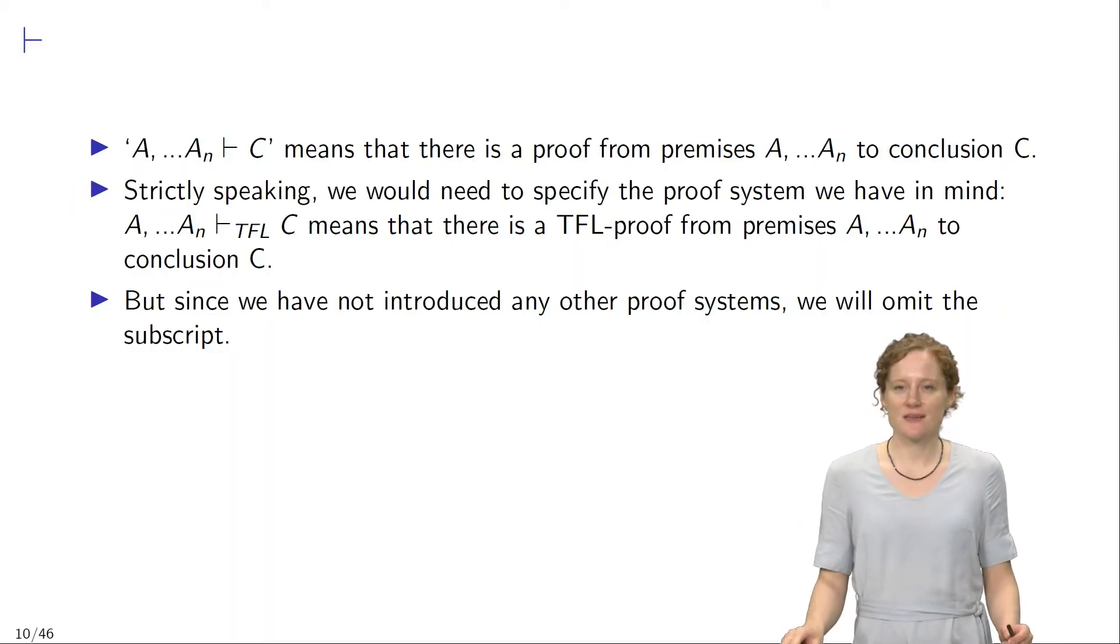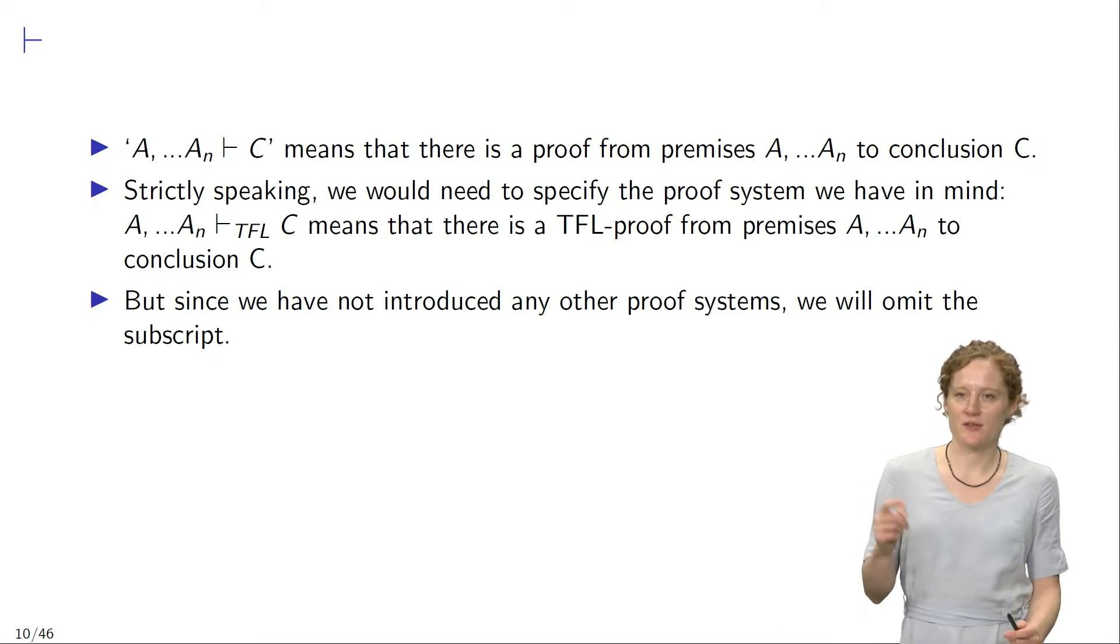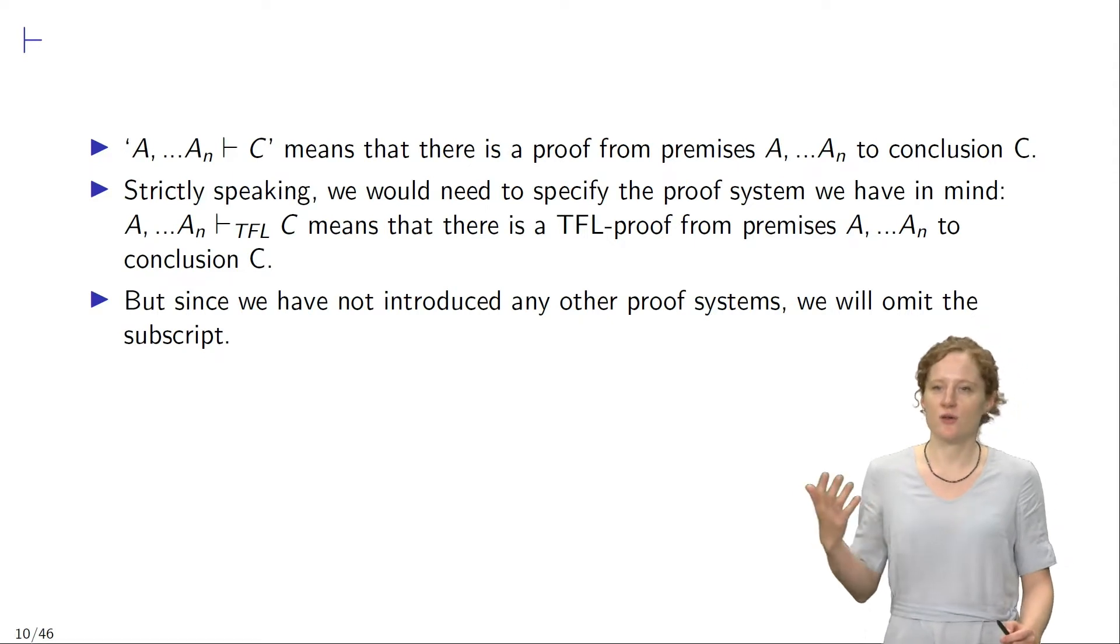The sentence A1 to AN turnstile C means that there is a proof from premises A1 to AN to conclusion C.